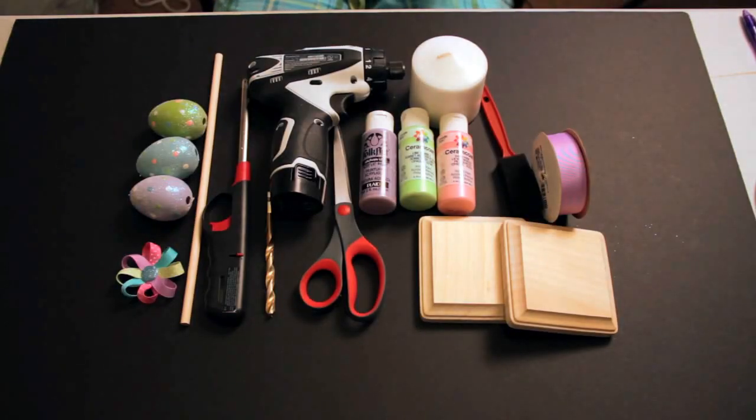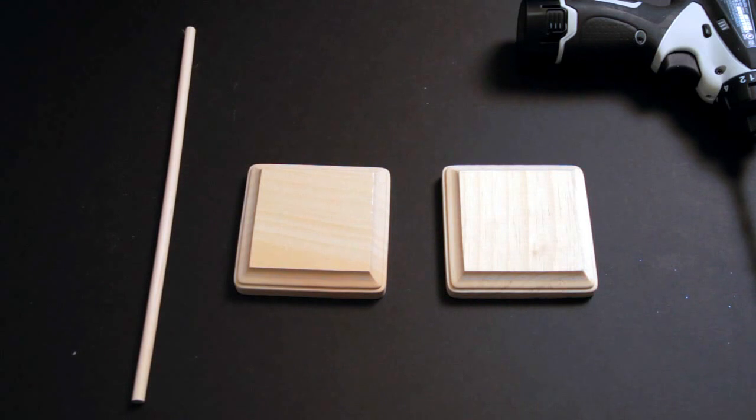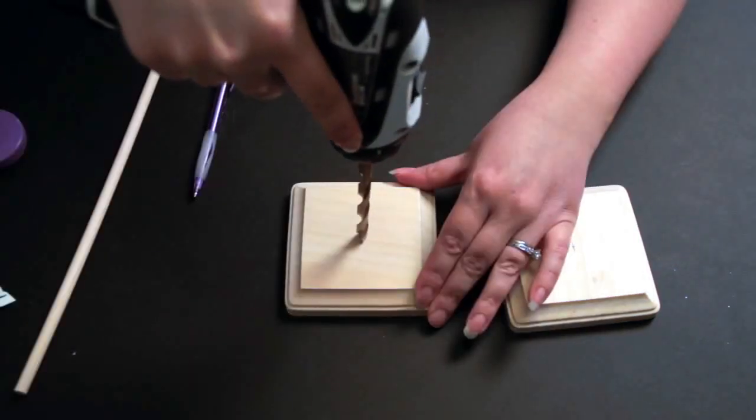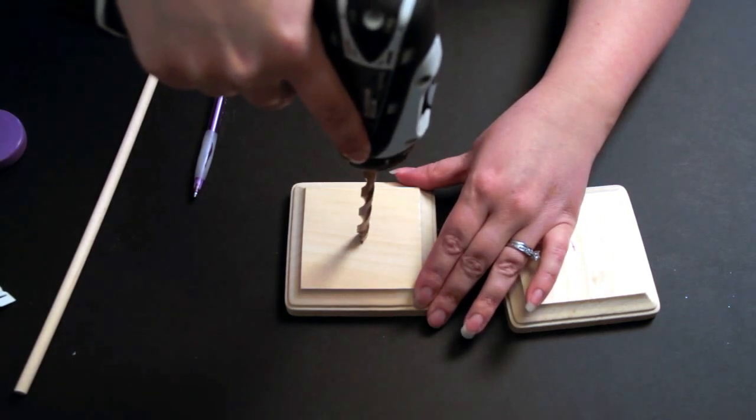For today, I will only be showing you how to make one candlestick. Your first step is to take your 4x4 piece of wood, measure and find the center. Drill approximately three fourths of the way through so that you have a hole for your dowel.